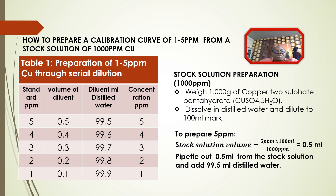It is important that we take note of how we pipette, as that is what causes error propagation. From this, we have prepared our 1 to 5 ppm concentration of copper.